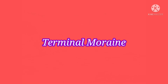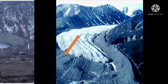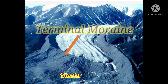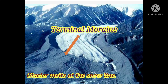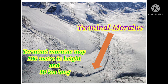Let's know about terminal moraine. Terminal moraines are also known as end moraines. Terminal moraines are a type of moraine which forms at the very end of a glacier. When a glacier reaches the snow line, it starts to melt, and therefore the transported materials of the glacier deposit and form a terminal moraine. Terminal moraines can be up to 100 meters in height and may be 10 km long.